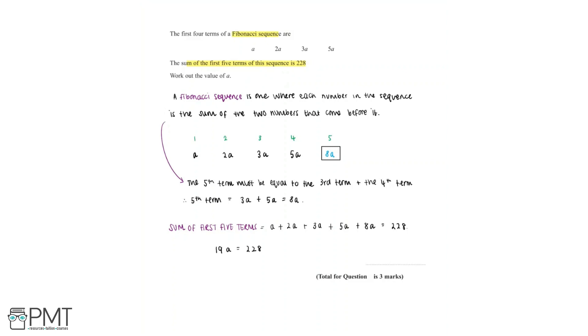To find the value of a, we can divide both sides by 19. 19a divided by 19 is equal to a, and 228 divided by 19 is equal to 12. So we've found that the value of a is equal to 12.